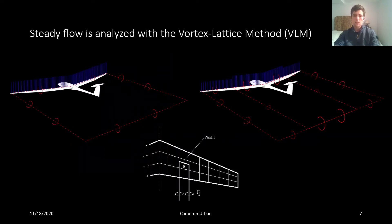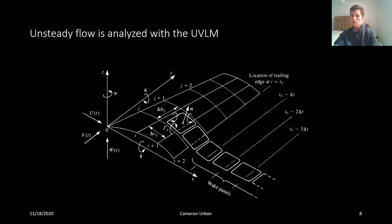The next step in understanding UVLM is to understand its cousin, the VLM. The VLM, also known as the vortex lattice method, is used to analyze steady aerodynamics, like those experienced by a normal airplane cruising along. We can think of the vortex created by an airplane as three line segments in a giant horseshoe. It turns out we can get even more accurate results if we divide the wing up into a bunch of little horseshoes and then add up each of their contributions. The main reason why we can't use this vortex lattice method to analyze unsteady aerodynamics is that it has a stationary wake, represented by the legs of the horseshoes. As you can imagine, when something is flapping, the wake changes while it flaps.